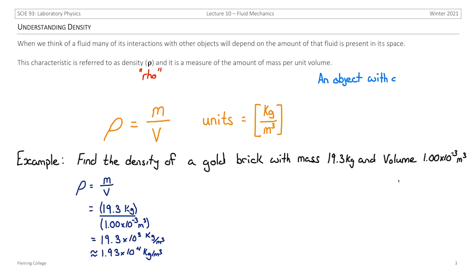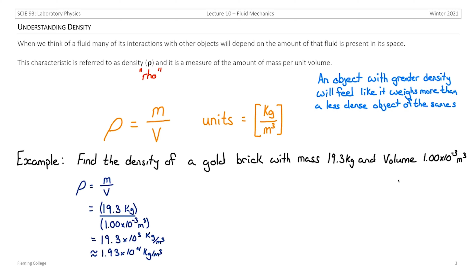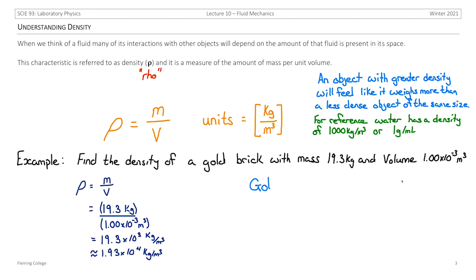An object with greater density will feel like it weighs more than a less dense object of the same size, because in that same volume there is more material occupying the space. For reference, water has a density of 1,000 kilograms per meter cubed — that's a metric ton per meter cubed, or equivalently 1 gram per milliliter. Comparing that to our gold brick, gold is roughly 19 times as dense as water.